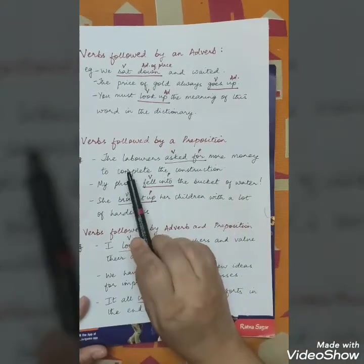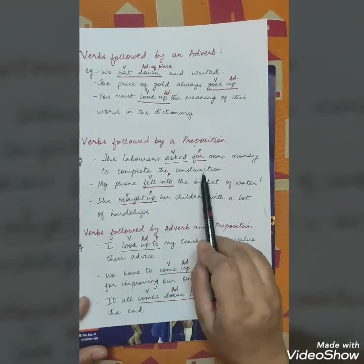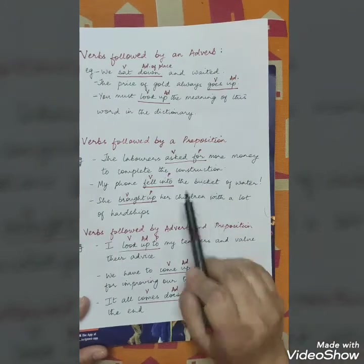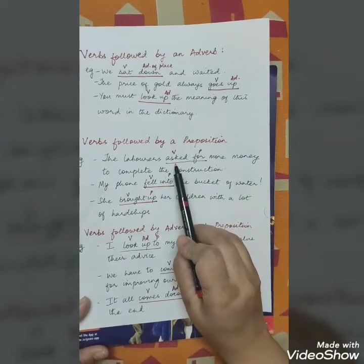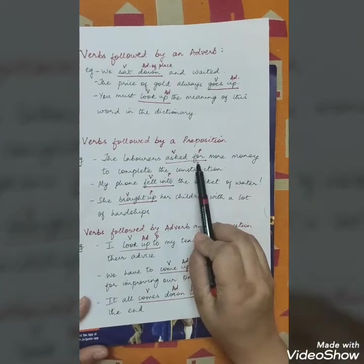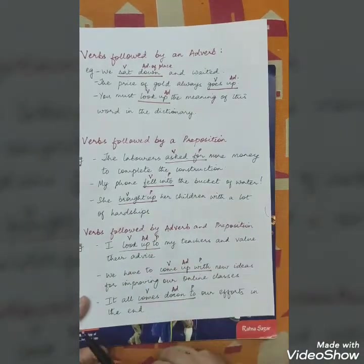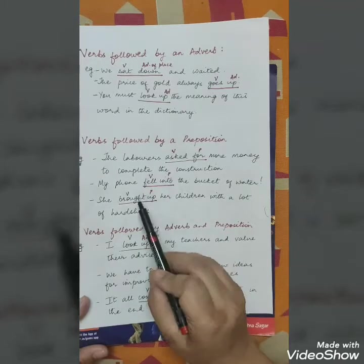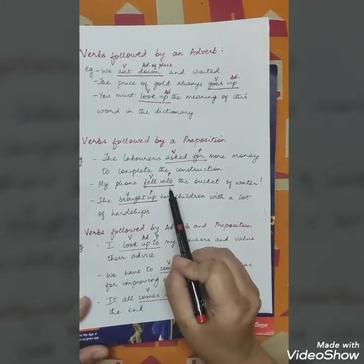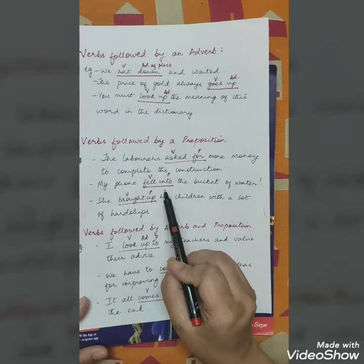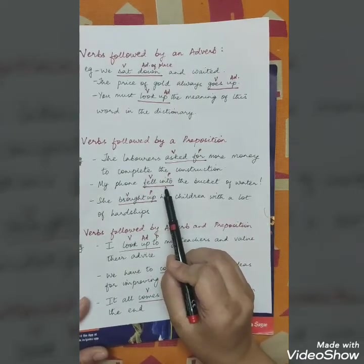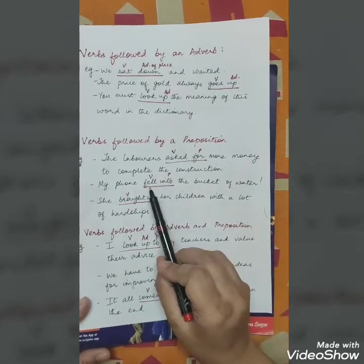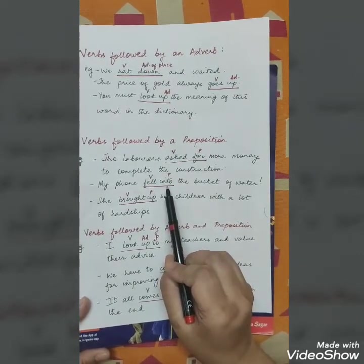The laborers asked for more money to complete the construction — here the phrasal verb is 'asked for', containing the verb 'asked' and the preposition 'for'. My phone fell into the bucket of water — here the phrasal verb is 'fell into', because it has the verb 'fell' and the preposition 'into' along with it.